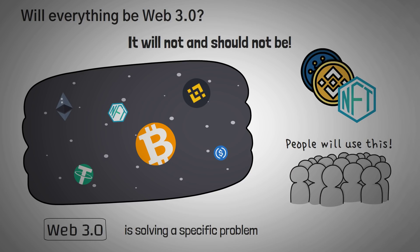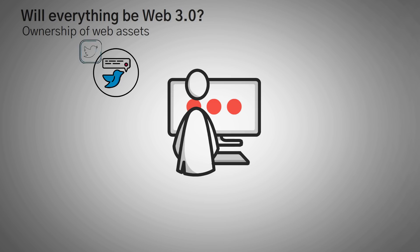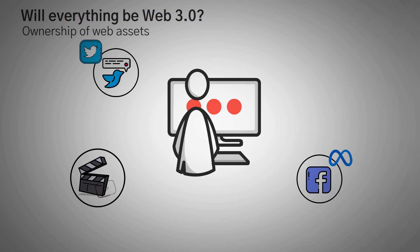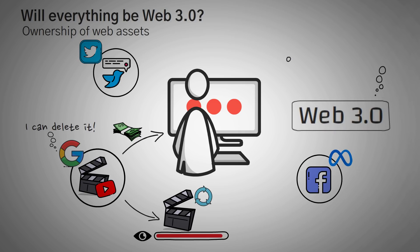With Web3, it solves a specific problem, and a big part of that problem is ownership of web assets. Whenever you make a tweet, Twitter owns it. Whenever you share a link on Facebook, Meta owns it. And whenever you post a video on YouTube, Google technically owns it. Google can choose to delete it, show it to a billion people, or even change what you say. The technology of Web3.0 makes it so that you truly own this piece of web content, not the publishing platform, and one of the ways it does this is through the use of an immutable blockchain.